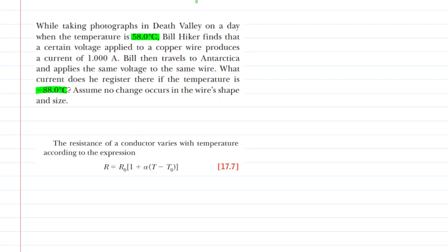With less resistance, we would expect that the current would actually increase. So that's a prediction we could make in this question, is that the current will indeed increase from one amp in Death Valley to some other value that we will solve for.